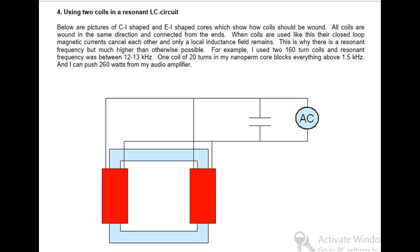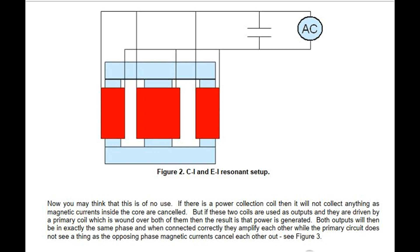Using two coils in a resonant LC circuit: pictures of CI-shaped and EI-shaped cores show how coils should be wound. All coils are wound in the same direction and connected from the ends. When coils are used like this, their closed-loop magnetic currents cancel each other and only a local inductance field remains. This is why there is a resonant frequency much higher than otherwise possible. For example, two 160-turn coils produced a resonant frequency between 12 and 13 kHz, as shown in Figure 2 — CI/EI resonance setup.